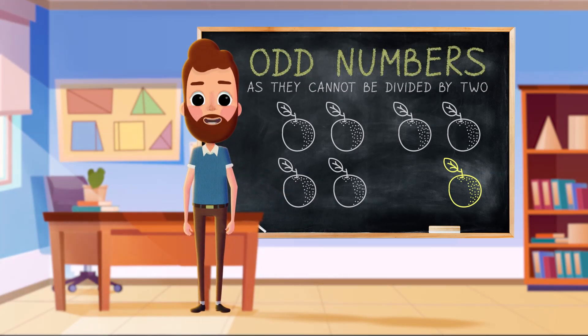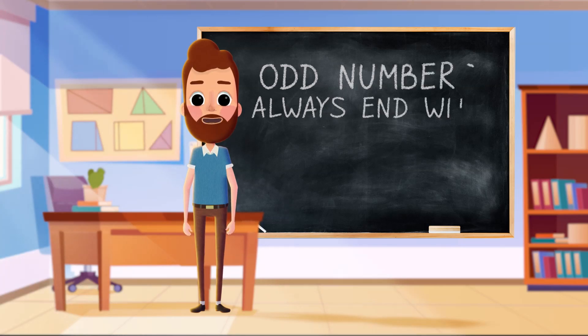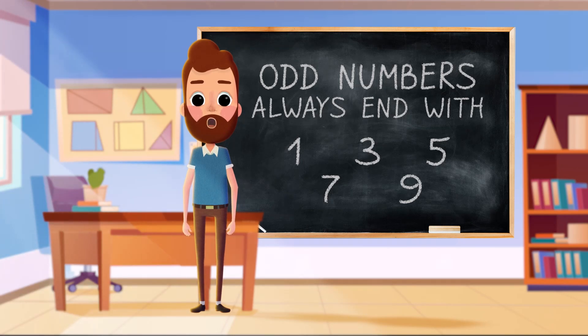So seven is an odd number. Odd numbers always end with a digit of 1, 3, 5, 7, or 9. 1, 3, 5,